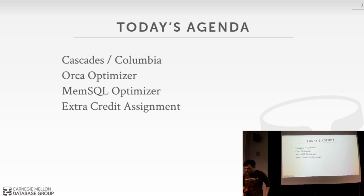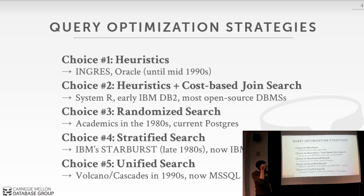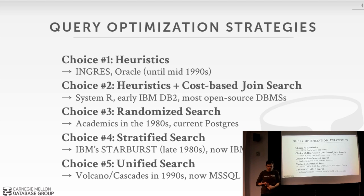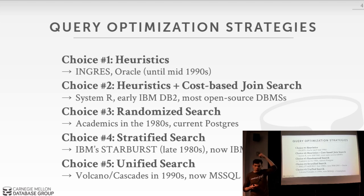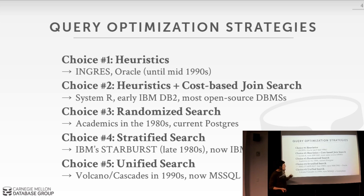As a refresher from last class, we walked through the history of query optimization and discussed various ways to implement a query optimizer. Going back to the 1970s with Ingres and Oracle, you had a heuristic-based approach where hard-coded rules in your source code do various transformations to put the query plan into an optimized form. This was a hacky approach because it doesn't consider cost — it has static rules like always doing predicate pushdown or always putting the largest table as the outer table in a join.